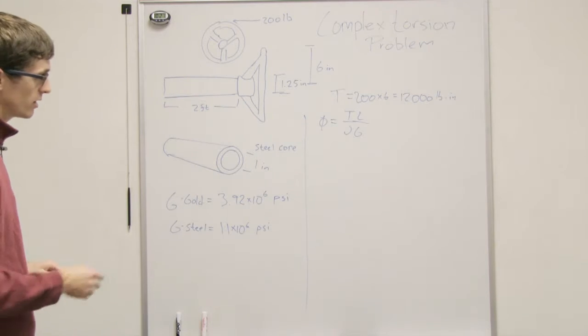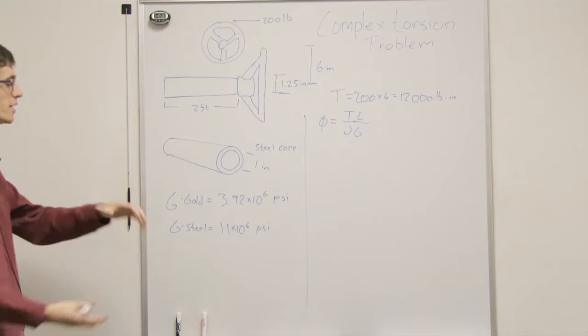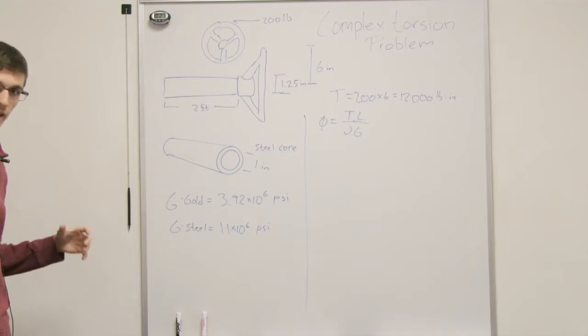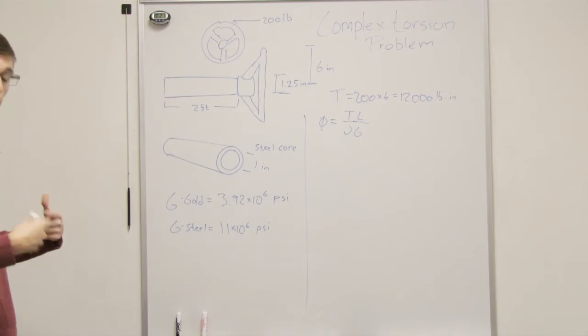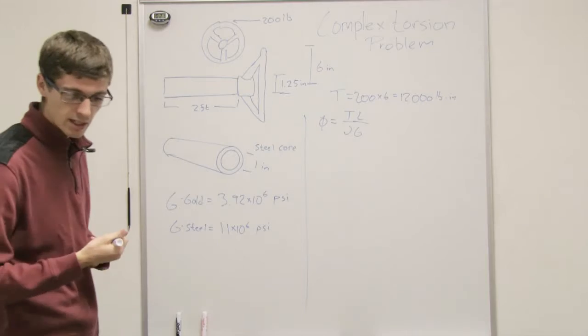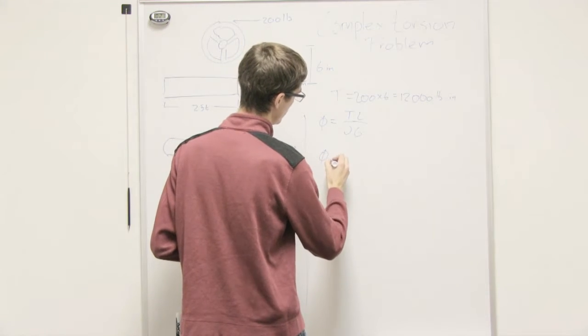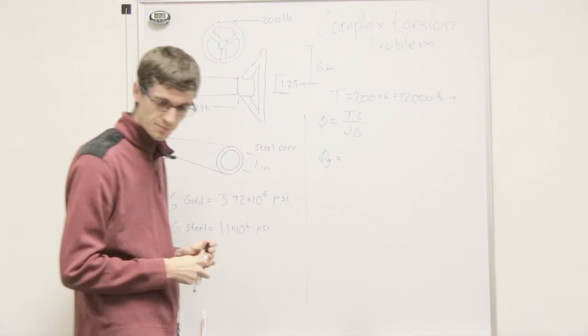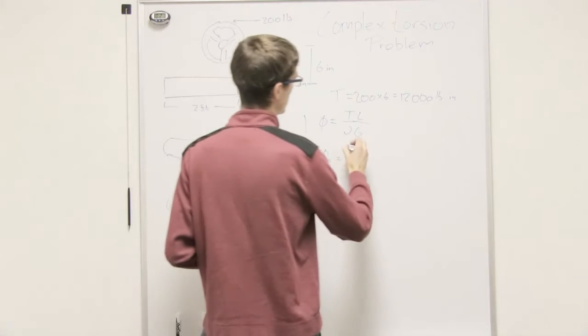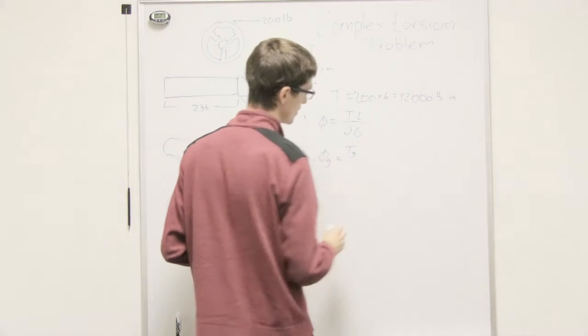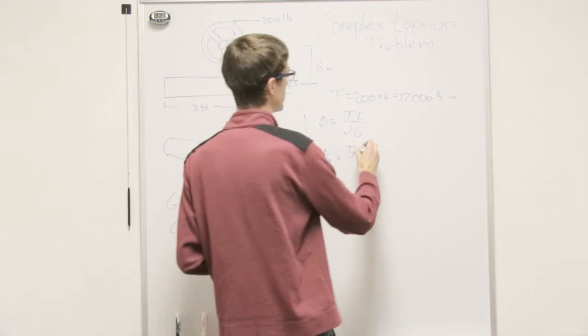So let's look at first, what is the angle of twist of the pipe, of the gold plated pipe that goes around the steel core. So the phi for the gold is equal to the torque of G, which we don't know, that's an unknown, times the length.